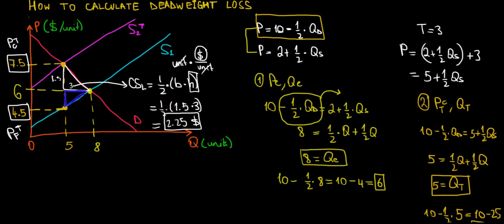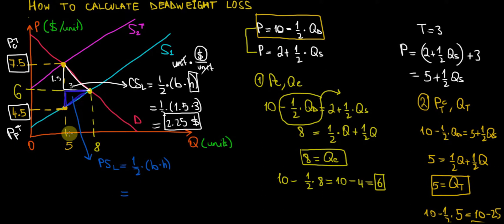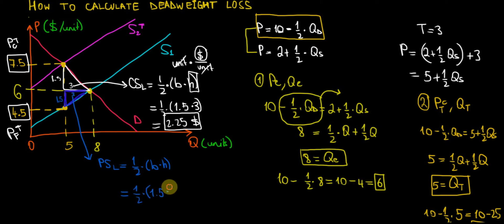With the same logic for the producer surplus loss — again the area of a right-angled triangle, 1/2 times base times height, measured in dollars. The height is the difference between $6 and $4.50, which equals $1.50. The base is the difference between 8 and 5, which equals 3. So producer surplus loss equals 1/2 times 1.5 times 3, which also equals $2.25.